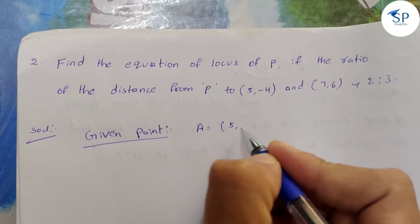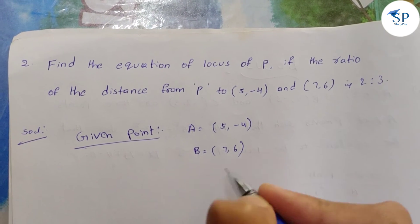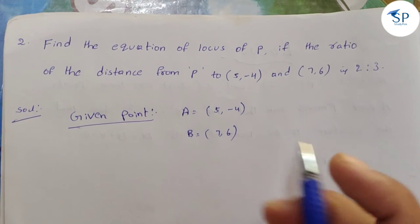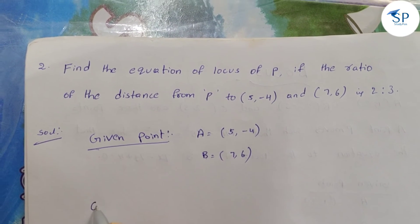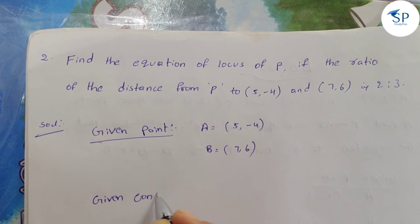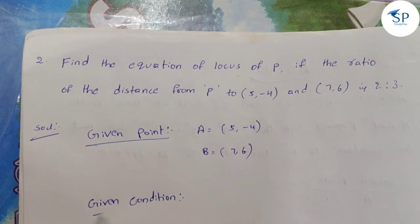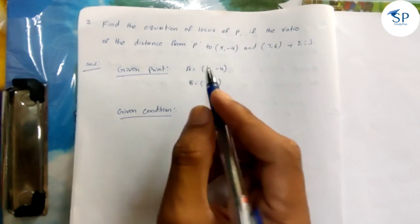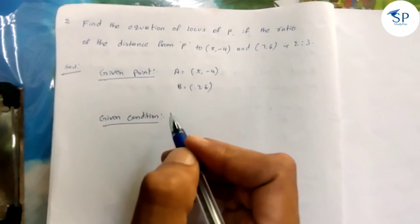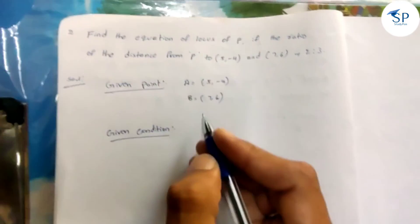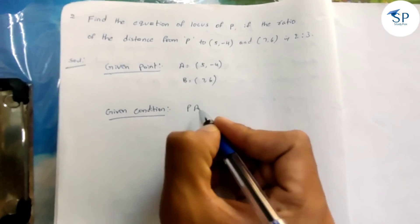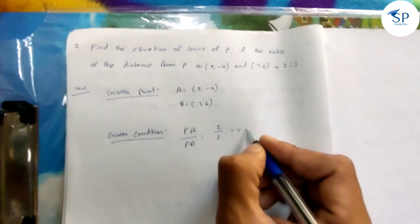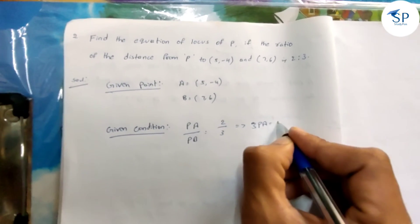A is equal to (5, -4) and B is equal to (7, 6). The condition is that the ratio PA to PB is equal to 2 by 3. So we cross multiply: 3PA is equal to 2PB.